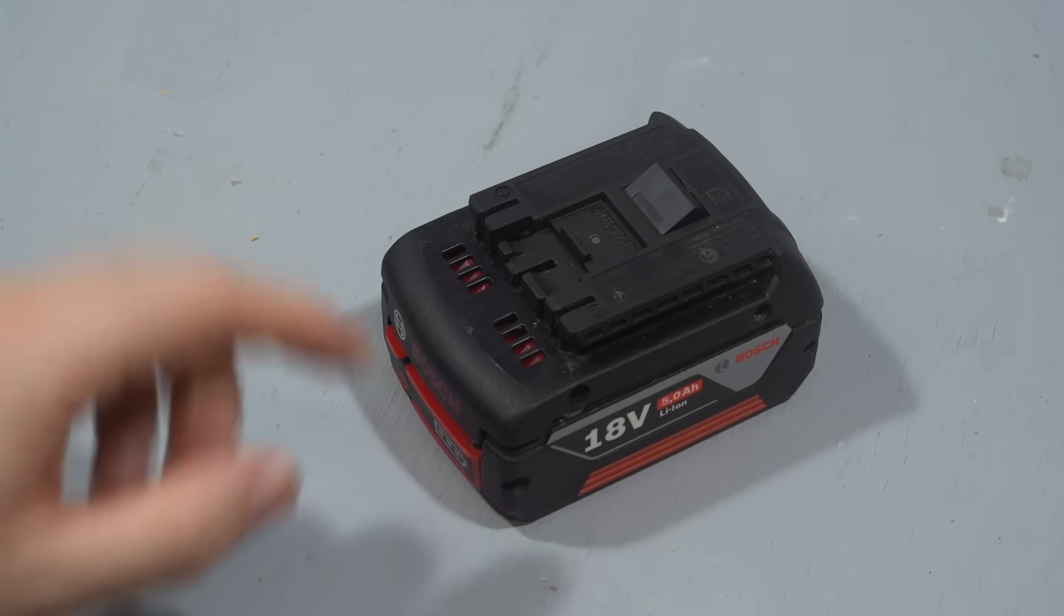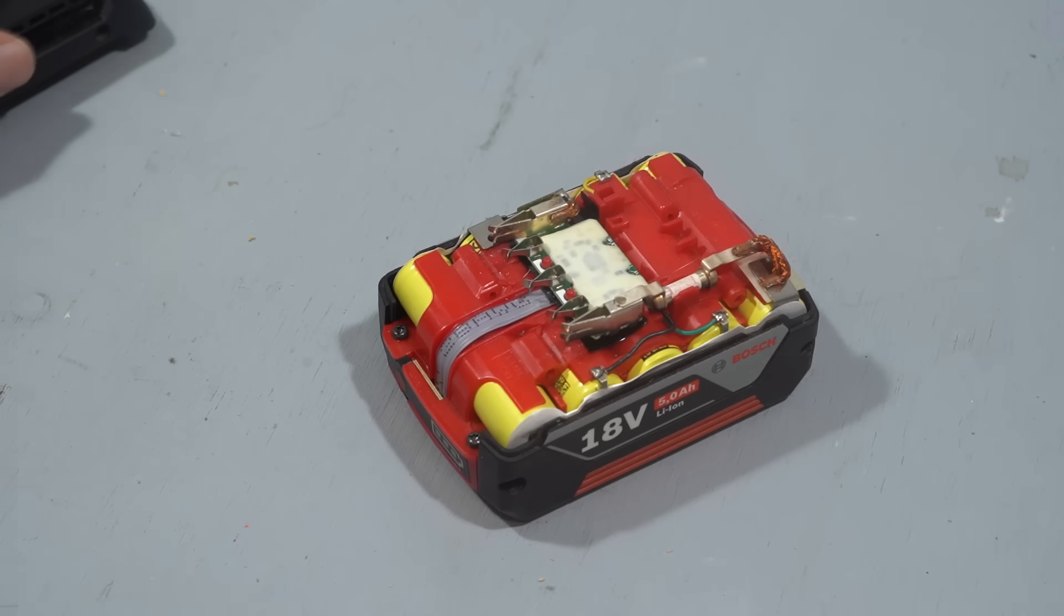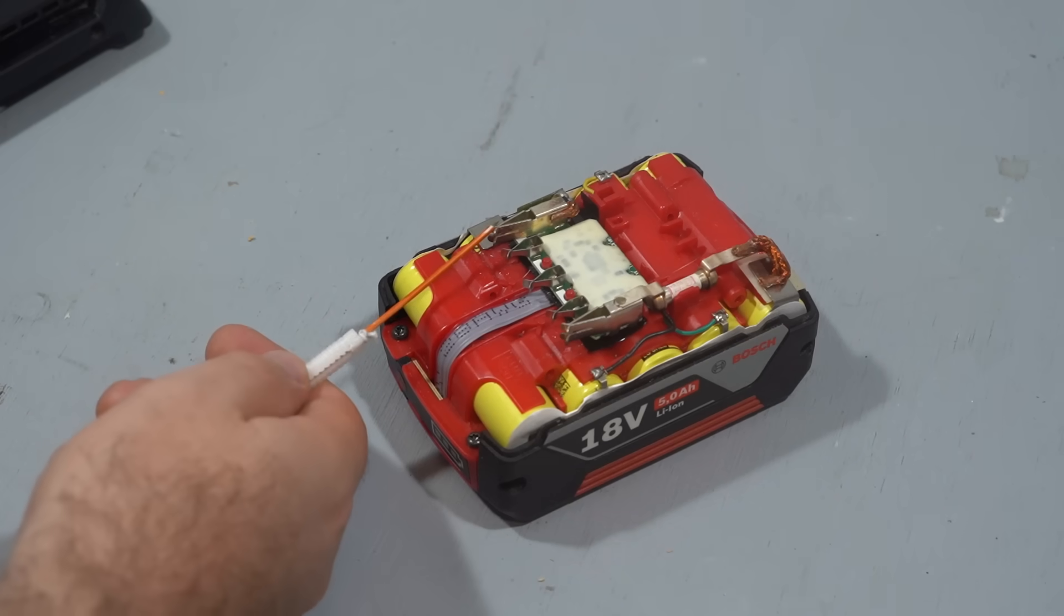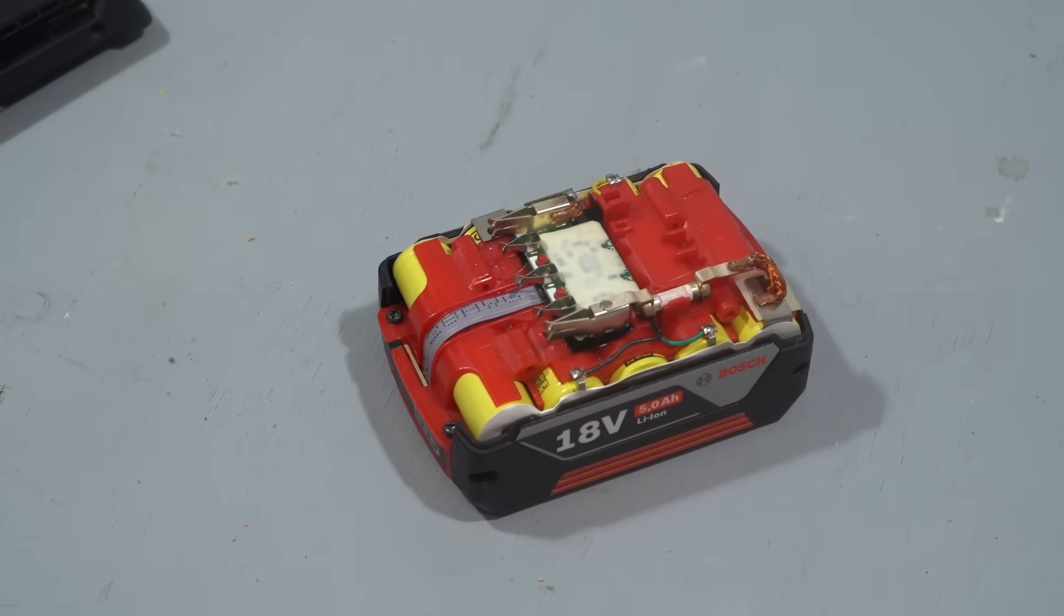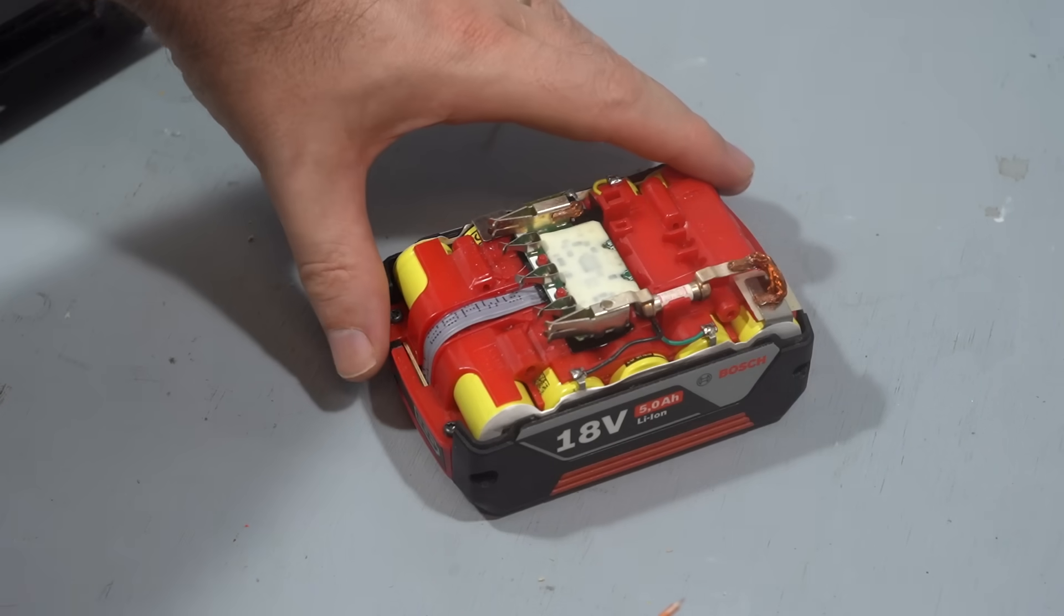There are five pins on a Bosch 18V Professional battery. B- and B+ are directly connected to the cells, so the battery has no way of cutting power. It does have a fuse on B- for short circuit protection, but this is obviously a one-time fuse.